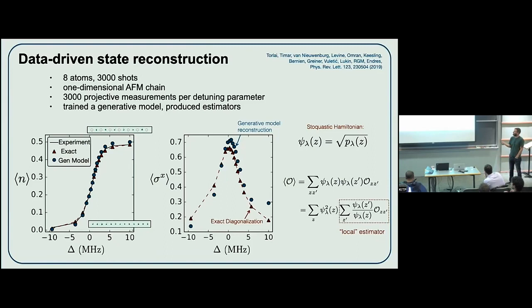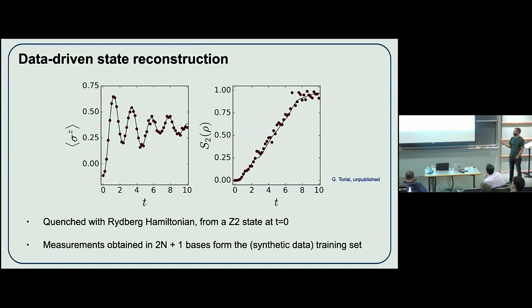There's nothing stopping data-driven reconstruction of time-dependent quantities. Here's a time-dependent curve of the occupation-related order parameter as a function of time, starting from a Z2 state and quenching with the Hamiltonian. Each one of those red dots is a generative model reconstructing that exact curve. The point here is you need many different basis measurements, so this is synthetic data — but you can do data-driven state reconstruction to get local estimators, and also things like Rényi entropies. Anything you can get from variational Monte Carlo, you can get from a trained generative model.